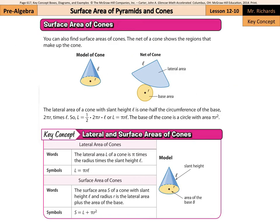Our next concept is surface area of cones. The net of a cone shows the regions that make up the cone — we have the base and a curved lateral area. The lateral area of a cone with slant height L is one-half the circumference of the base, 2πr, times the slant height L. So lateral area equals one-half times 2πr times L, and since one-half times 2 is 1, the lateral area simplifies to πrL. The base is a circle with area πr squared. So total surface area equals πrL plus πr squared.